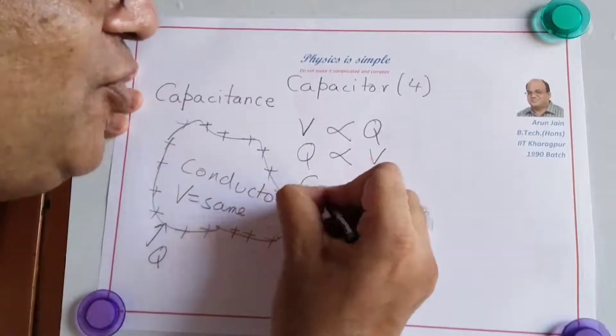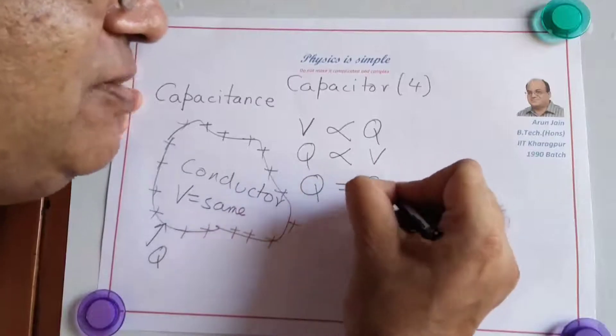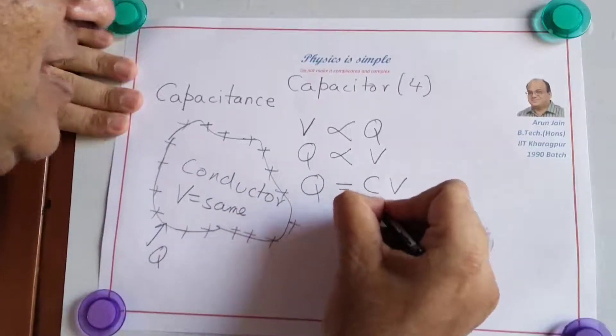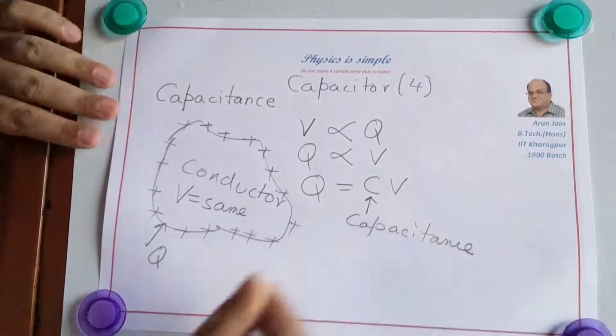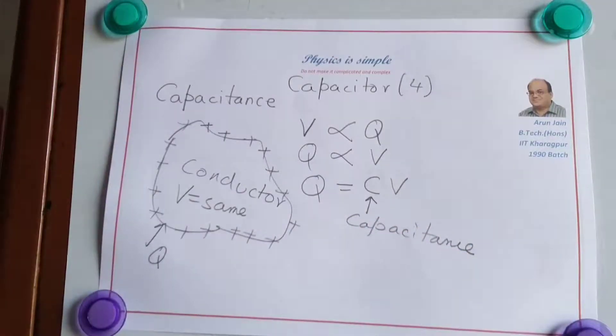And therefore we can write Q equal to CV. This C is capacitance. Capacitance is the capacity to store charge for a given potential.